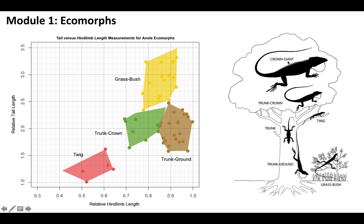All these different environments result in slightly different body types, some more drastic than others, like the grass bush or the crown giant. Depending on where you live, you have different characteristics because there are going to be different needs — slightly different food sources, environments, shelter, and predators. Each species needs to adapt to those environmental pressures accordingly. That's the idea of an ecomorph: an organism adapts its body type based on where it lives, and you can see that reflected in the graph.